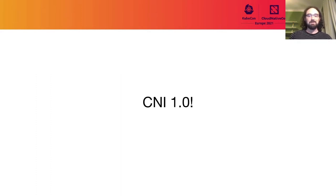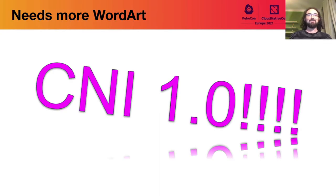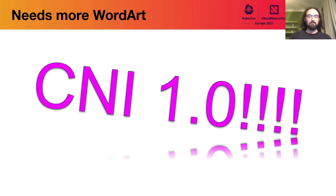The first agenda item is CNI 1.0. By the time you're watching this talk, CNI 1.0 will have been cut. This is a pretty cool achievement — this is a standard that started from the community about five years ago, and it's finally time for us to declare 1.0 and that we've reached a stable specification.